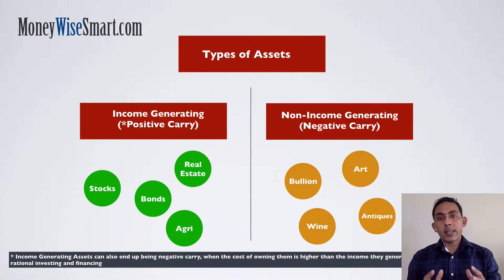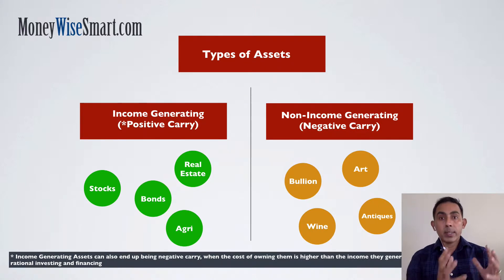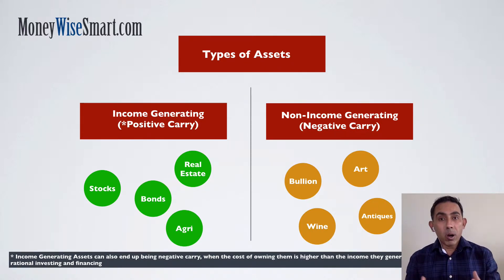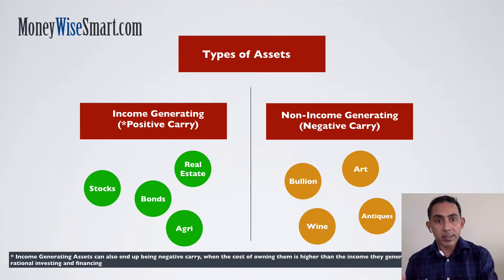Let's talk about asset categories. For the purpose of this course, we segregate all assets under two categories: one is the income-generating assets like stocks, bonds, real estate, farmland, etc., and the other is non-income-generating assets.